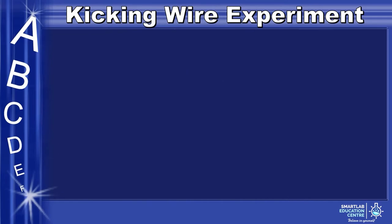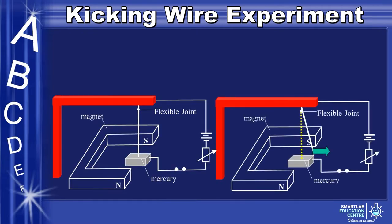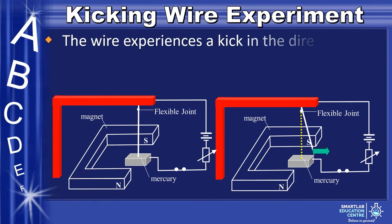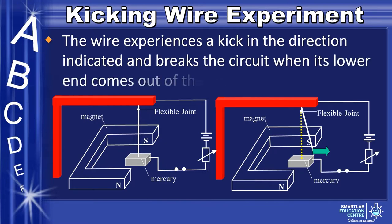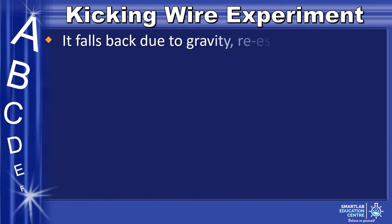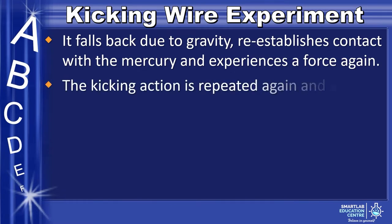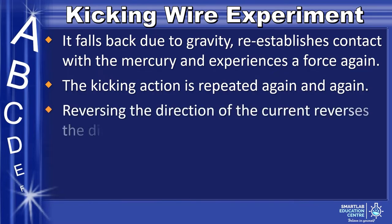Now, let us talk about the kicking wire experiment. When we close the switch, you will notice the flexible wire going up and down, as if it was kicking. The wire experiences a kick in the indicated direction and breaks the circuit when its lower end comes out of the pool of mercury. It falls back due to gravity, re-establishes contact with the mercury, and experiences a force again. The kicking action is repeated again and again. Reversing the direction of the current reverses the direction of the kick.